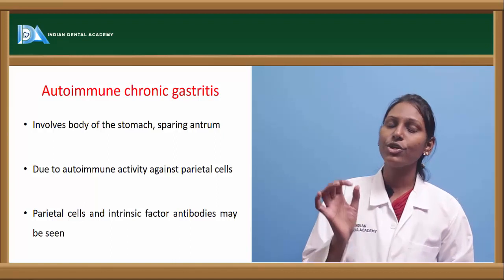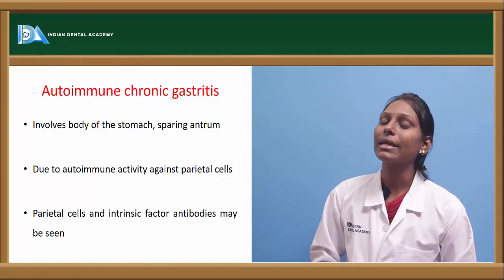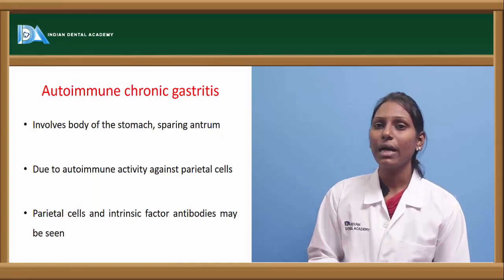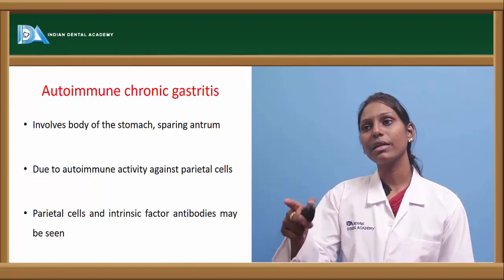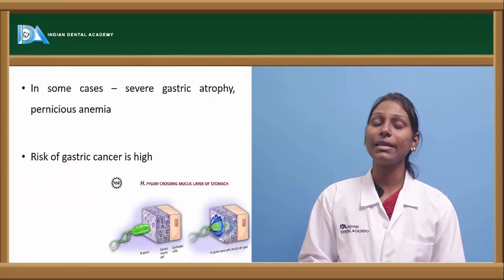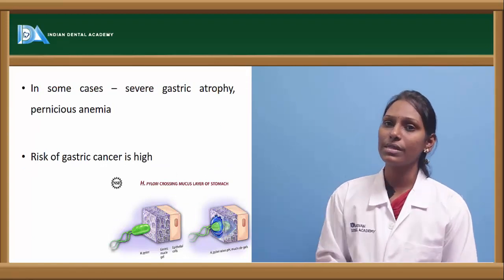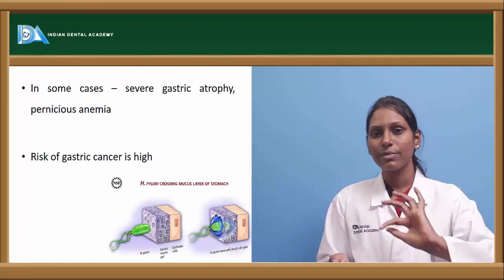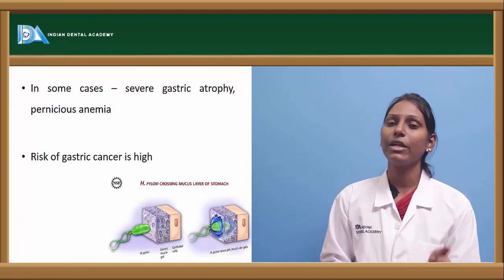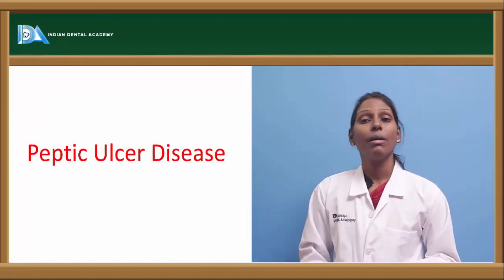In H. pylori-induced chronic gastritis, lymphocytes and plasma cells are usually seen. Most patients are asymptomatic, but symptomatic cases show severe dyspepsia-related symptoms. Autoimmune chronic gastritis involves the body of the stomach while sparing the antrum — this is the pathognomonic feature. Autoimmune activity against parietal cells leads to dyspepsia, and parietal cell and intrinsic factor antibodies can be seen. Because intrinsic factor is affected, pernicious anemia is associated with this condition. In severe cases, gastric atrophy occurs with a high risk of gastric cancer.